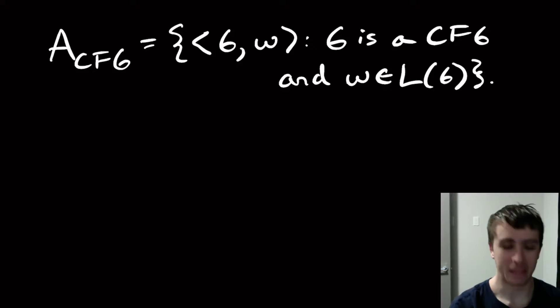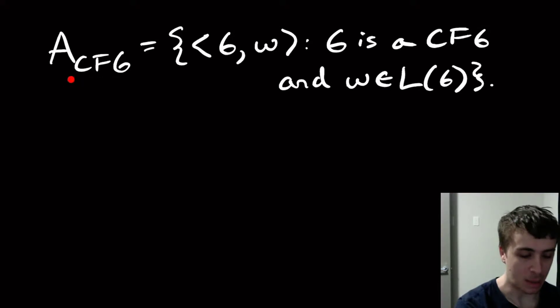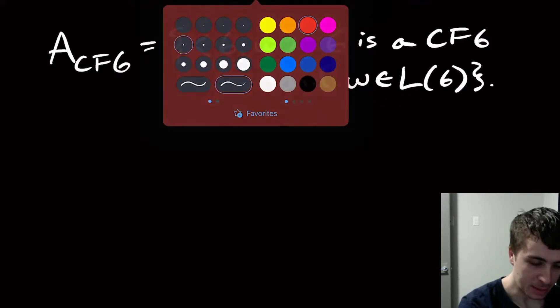Hi, welcome to another edition of Easy Theory. So today we're going to look at this problem, which is A_CFG, which is all pairs where G is a context-free grammar and w is in the language of G.